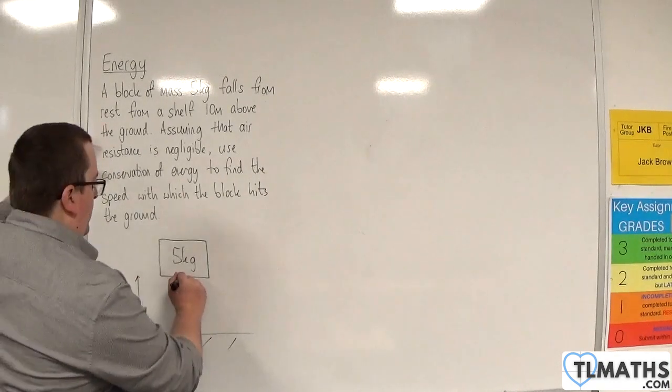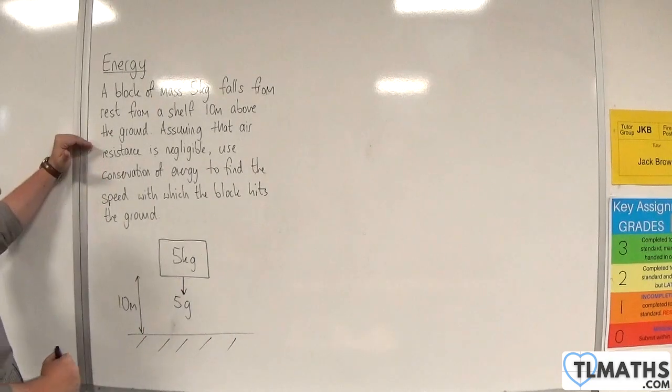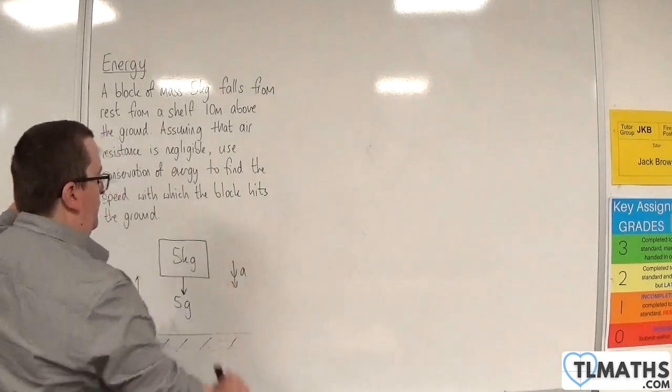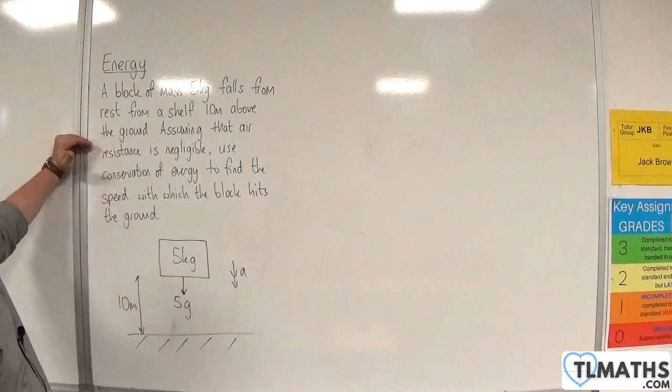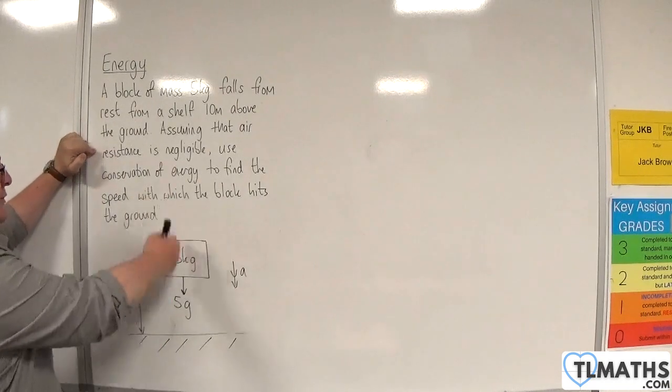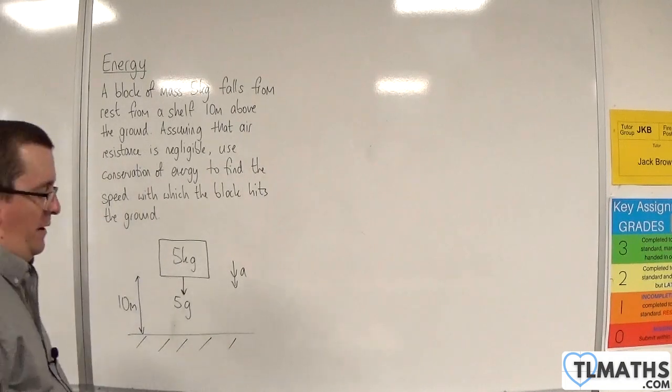Okay, so we're going to have a weight working vertically downwards of 5G, and it's going to be accelerating downwards. Assuming that air resistance is negligible, so there are no other forces acting vertically. Use conservation of energy to find the speed with which the block hits the ground.